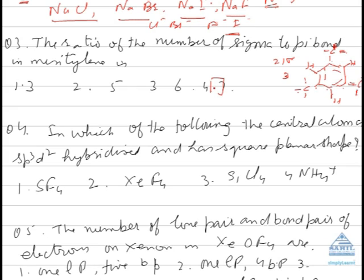Dear students, once again — supposing you get benzene, please expand the structure and write it out explicitly. Each line represents a sigma bond. Count the number of sigma and pi bonds carefully. If you do not draw the structure, you will commit errors.